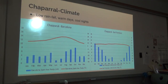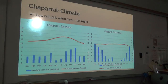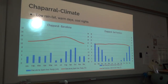The climate of chaparral environments tends to be moderately warm year-round, with cool nights. Chaparral environments have low to moderate rainfall depending on location — about 16 to 17 inches. The great variation is due to proximity to the coast and where they are located in the world.